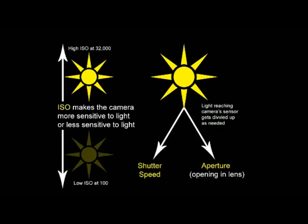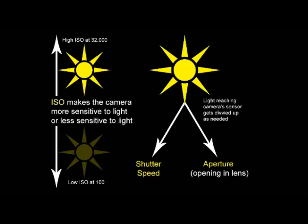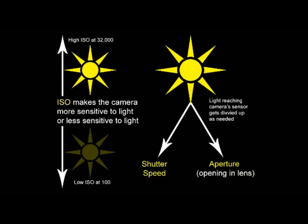So basically the ISO determines how sensitive your camera is to light. Once you set the ISO, you take that volume of light and you're going to split it between shutter speed and aperture. That's what we're doing today.